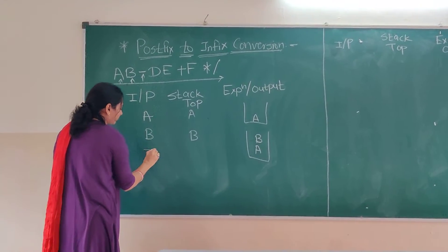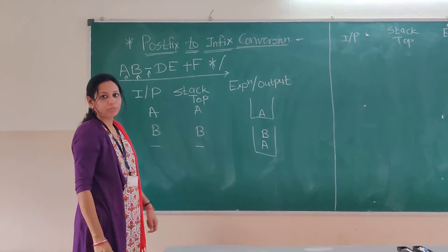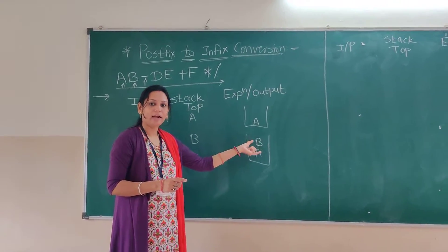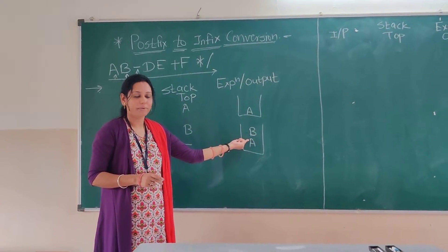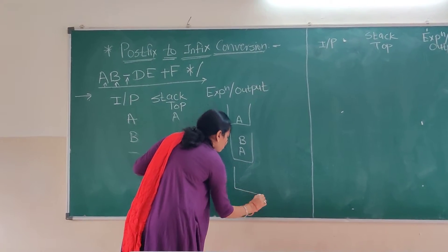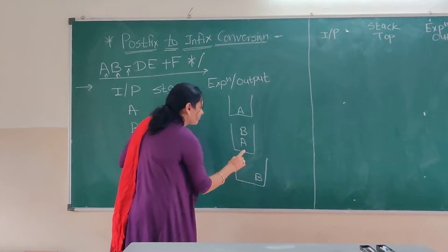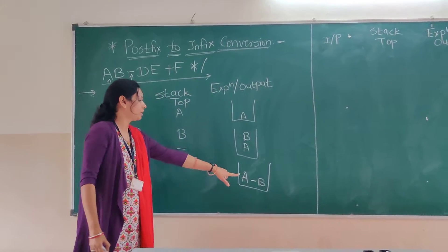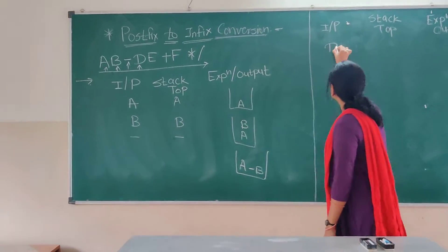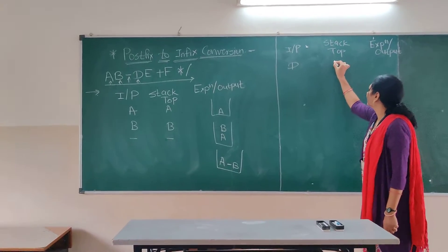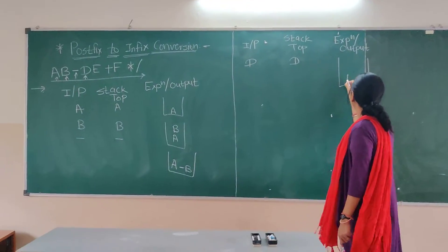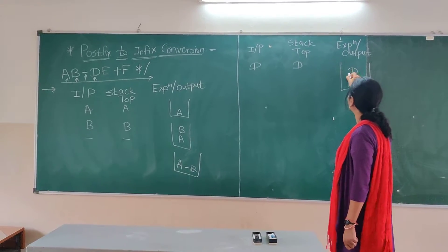Next is the operator minus. As per our algorithm, whenever an operator is encountered we pop the operands and the operator is placed in between them. So we place the minus operator between these two elements: the first popped element is B and the second is A, giving us A minus B. This result is pushed back. Next input is D, which is an operand, so the stack top becomes D, and the stack contains A minus B with D on top.